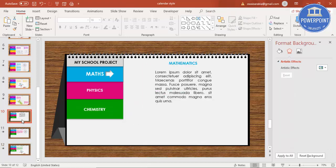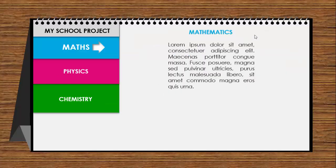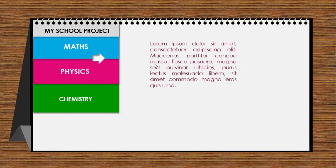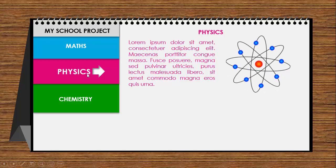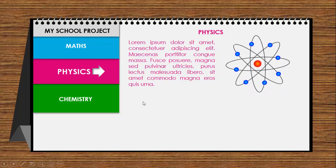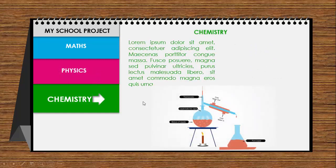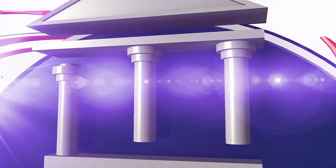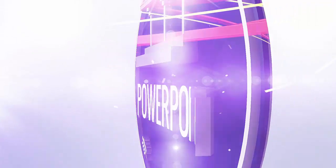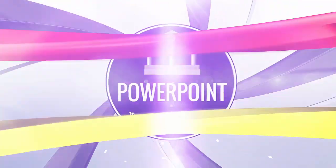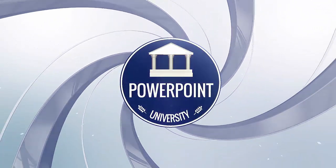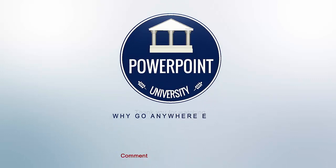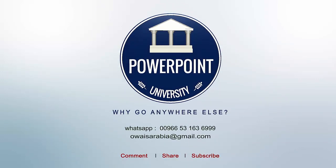Let's see how it looks in the slideshow. You can see the calendar with Maths, Physics, and Chemistry. When I click, the morph transformation shows Maths becoming the focus, it rotates, and then clicking goes to Chemistry. That's it from me — thank you for watching PowerPoint University. Don't forget to subscribe — see you soon with more interesting stuff. Goodbye!